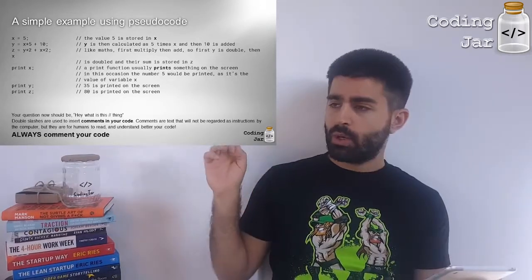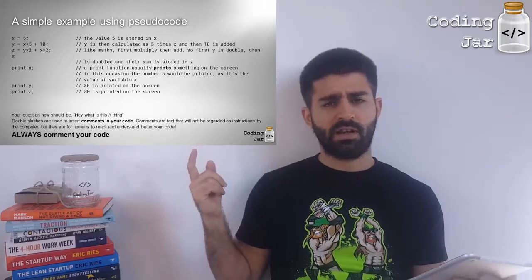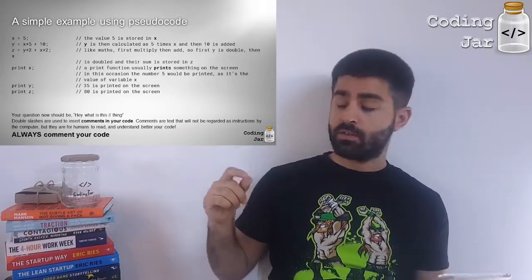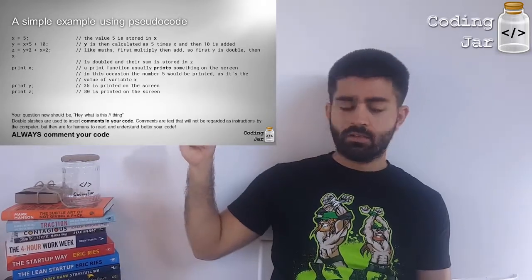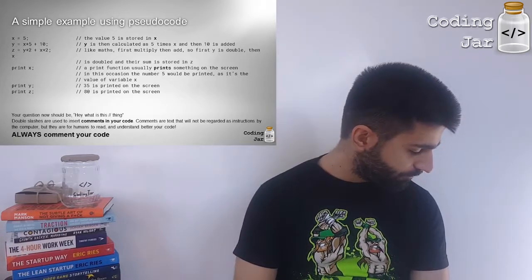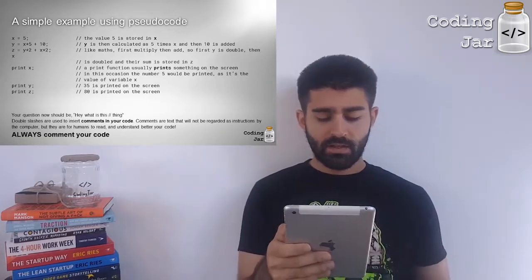Then we have print y, which according to my calculations is 35. If I'm wrong, correct me. There are comments below, you can add to those comments. So, 35 is going to be printed on the screen. And then print z, which gonna output 80 to the screen.